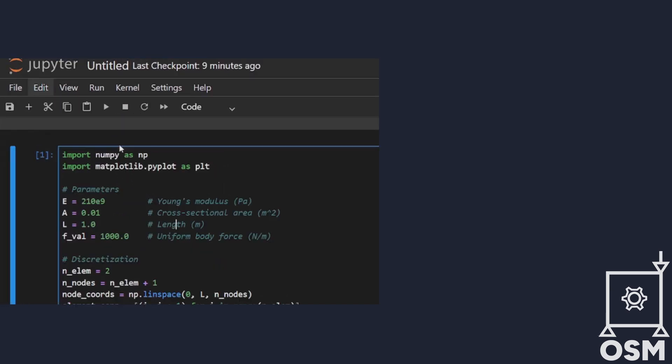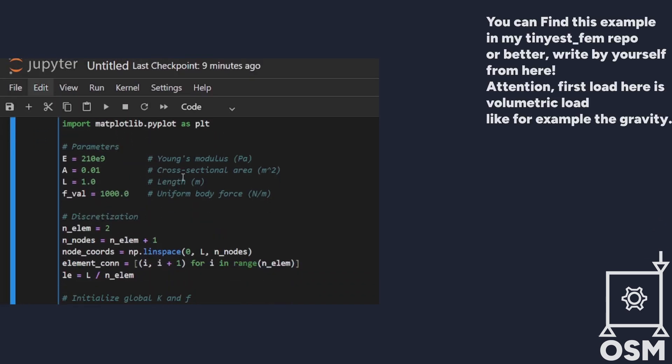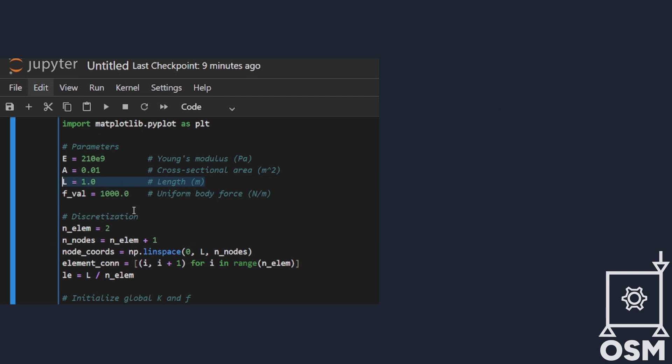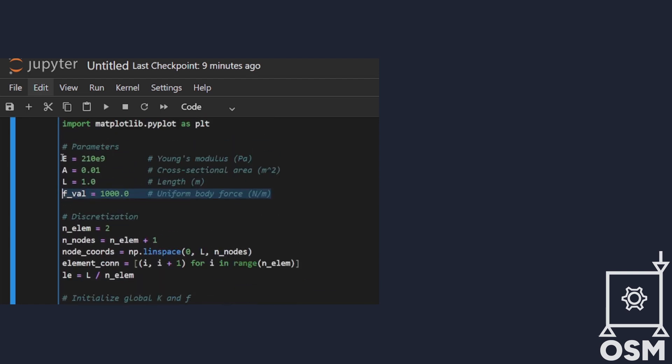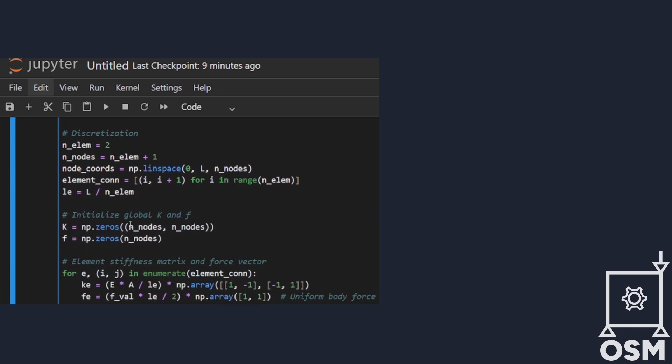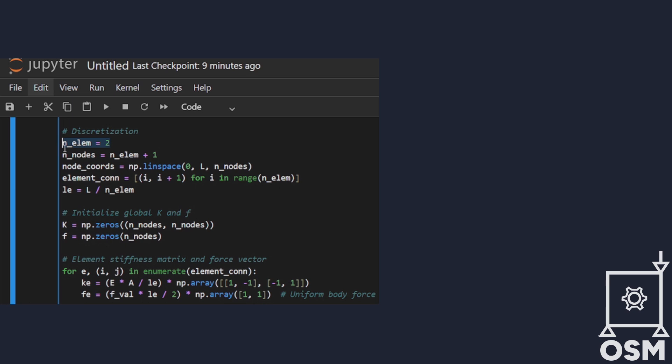Let's walk through a simple Python FEM solver for a 1D bar. We consider a bar of length 1 meter, fixed at the left end, with a uniform body force of 1000 N per meter. The material has a Young's modulus of 210 gigapascals and a constant cross-sectional area.